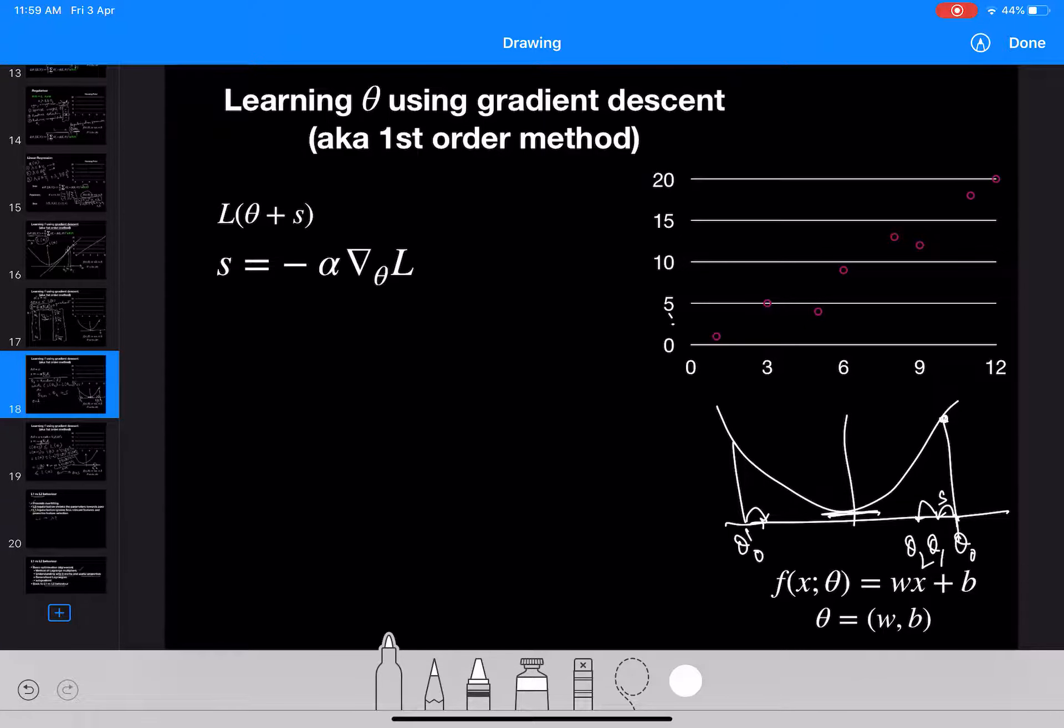So we have seen what gradient is. Now we will look at the algorithm to do gradient descent. So let's write it down first. Define a function gradient descent and it takes parameter initial theta, then it takes the